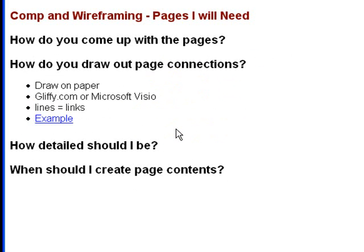So how do you draw out page connections? You can either use paper and a pen to draw lines connecting each page, or you can use something like gliffy.com or Microsoft Visio. These are all diagramming softwares. Gliffy.com is actually an online diagramming website that allows you to draw diagrams and flowcharts. What I usually do is draw lines between the pages to represent links. Let me just show you a few examples that I made from gliffy.com.